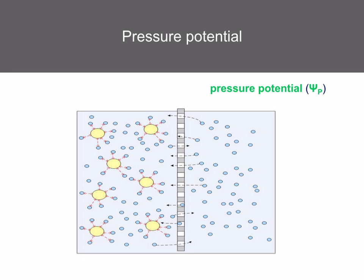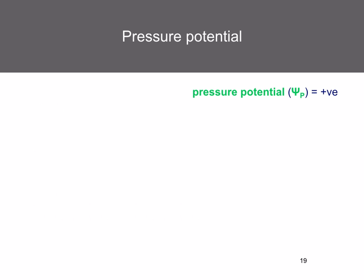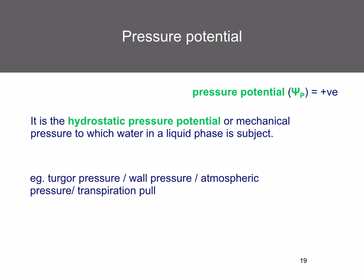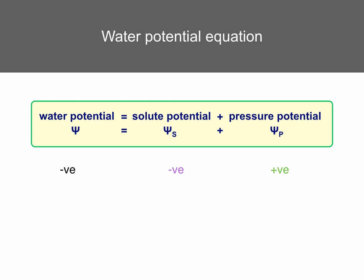Pressure potential is also a component of water potential. If water moves by osmosis and pressure is applied to resist that movement, this is the pressure potential, which is important in plants. Pressure potential is given a positive value, except at the top of xylem where transpiration causes tension. It's the hydrostatic or mechanical pressure to which water in a liquid phase is subjected — for example, turgor pressure, wall pressure, atmospheric pressure, or transpiration pull. So: water potential = solute potential + pressure potential.